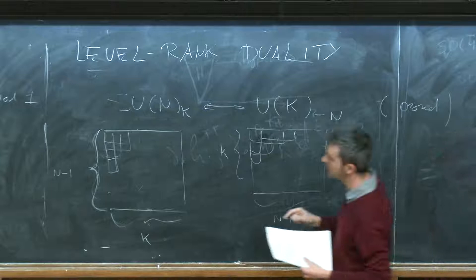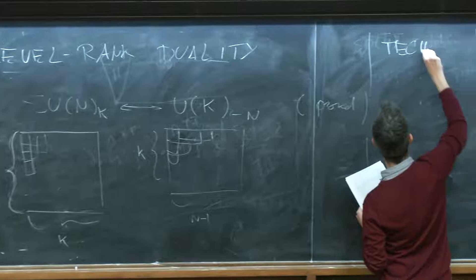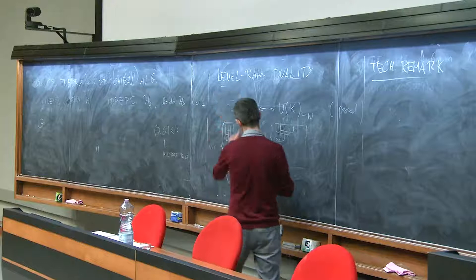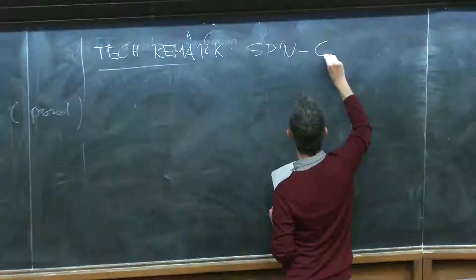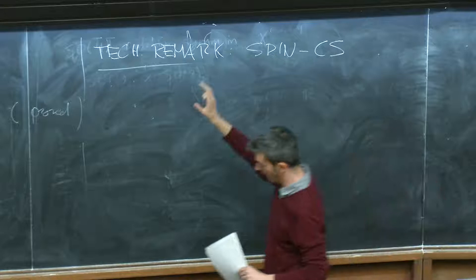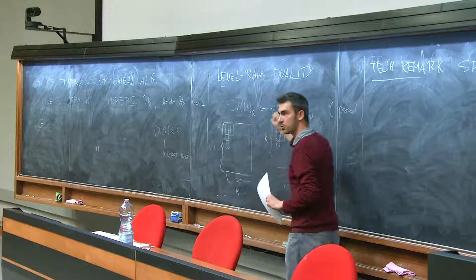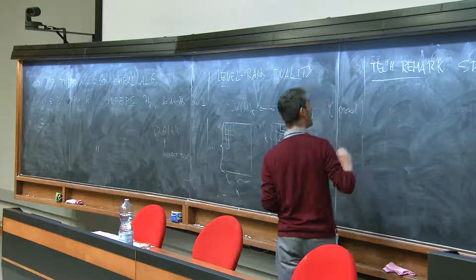I would like to make two comments about this duality. The first comment is a technical remark: this duality is not really a duality of standard Chern-Simons theories, but it's a duality of spin theories, or spin Chern-Simons theories. I do not have time to explain this point fully; I can give more details in the discussion session. One has to do a small operation on this theory if we really want to be precise and have two theories which are truly dual.